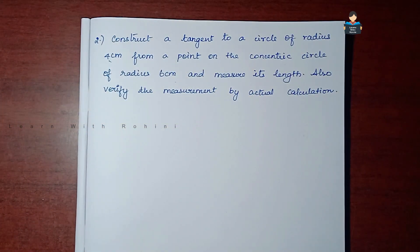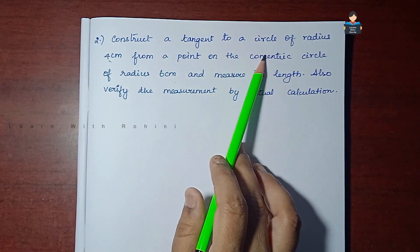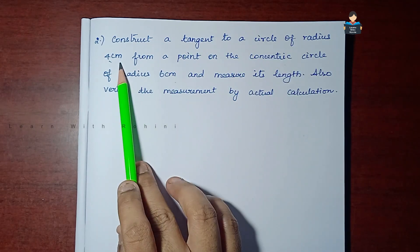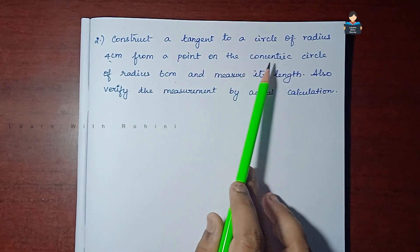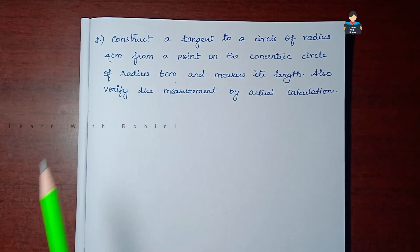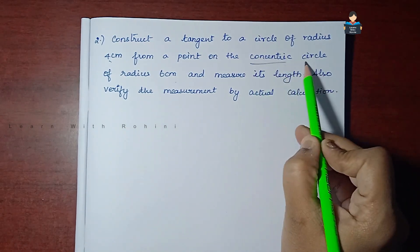Hello everyone, welcome to our channel. In this video, Chapter 11 Constructions, Exercise 11.2, second sum. Construct a tangent to a circle of radius 4 cm from a point on the concentric circle of radius 6 cm.